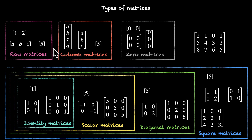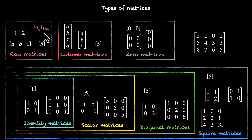Now let's technically define these matrices. For a matrix to be a row matrix, the condition is on the order: a matrix which has the order one by N is called a row matrix. Here we fix the row number to one; the number of columns can vary. So if you see something like one by five as an order, you can say that's a row matrix.